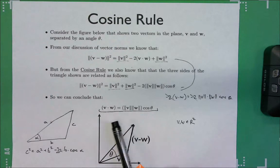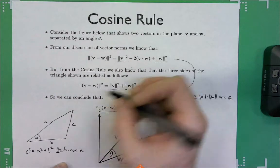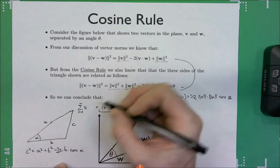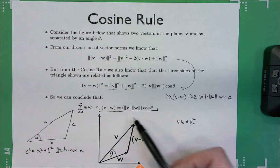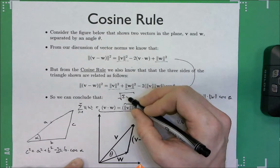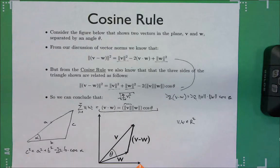Matching terms, the -2(v dot w) term must equal -2||v||·||w||·cos(θ). Canceling the -2, we arrive at the geometric interpretation of the dot product: v dot w equals ||v||·||w||·cos(θ). So the dot product of two vectors equals the product of their lengths times the cosine of the angle between them. This is something pretty cool — it's not obvious at all that the sum of v_i·w_i would equal this geometric quantity.